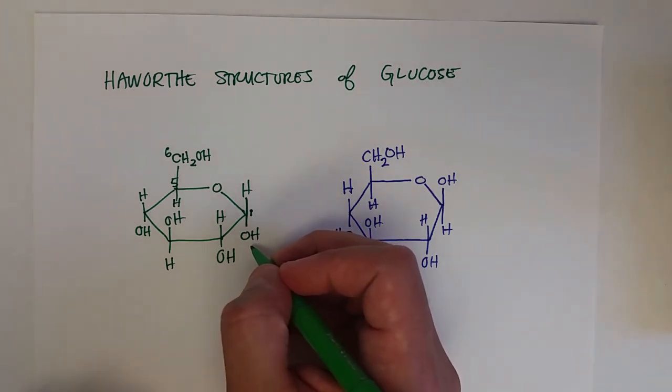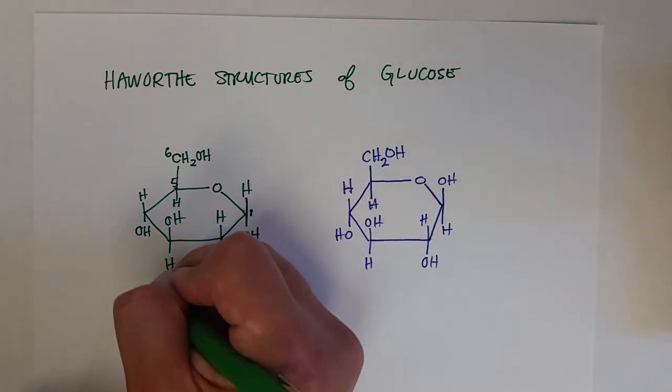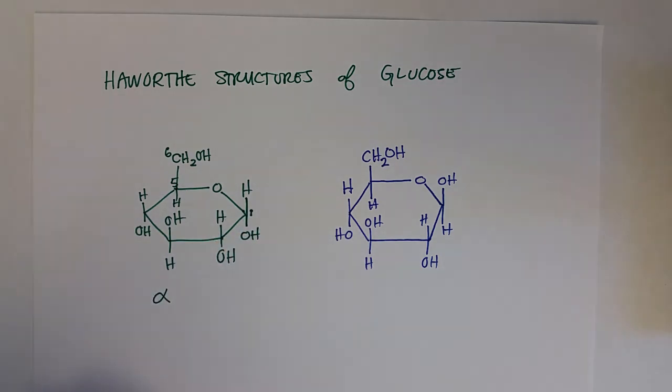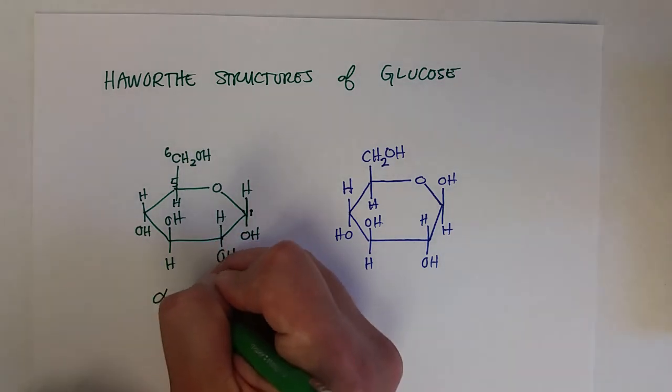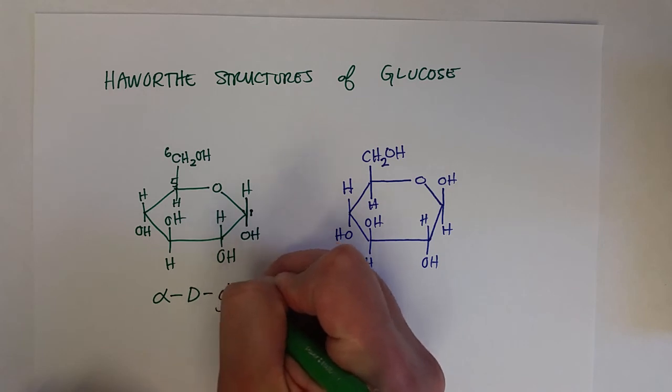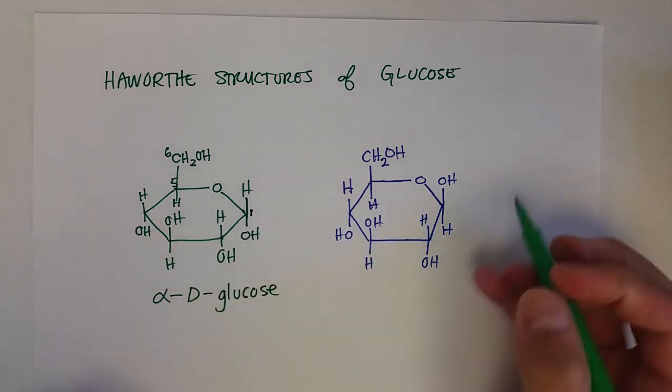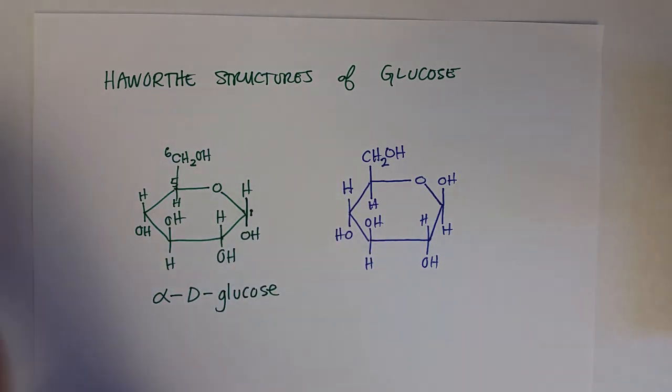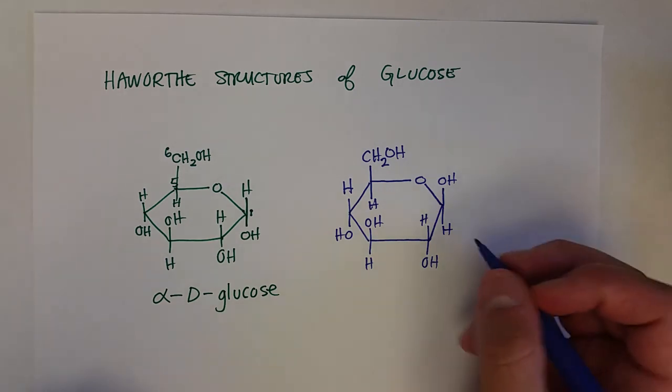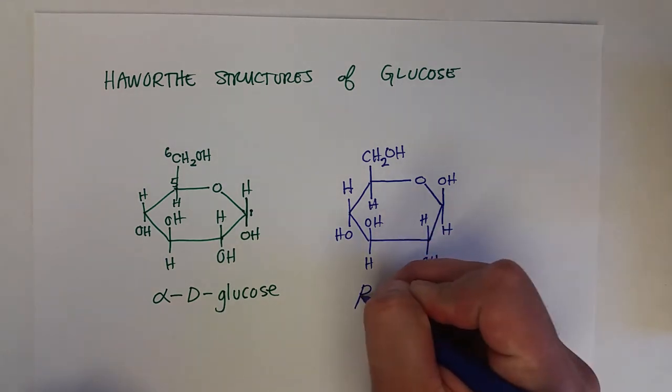And so these give rise to two isomers from that possibility. When the hydroxyl group is in the down position for the cyclical structure of glucose, we call that the alpha isomer. So this would be alpha D-glucose.